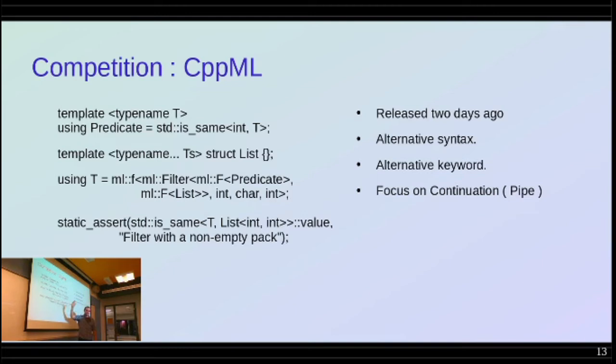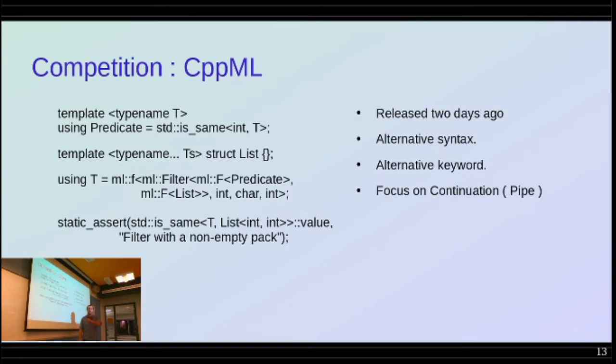This filter puts those types that correspond to the predicate into another MLF list. So with int, char, int, is it the same as int? You must return two ints because we removed the char. T is exactly the same as list of int and int. The focus is on continuation — if you were to put something else in list, you can continue to do operations on the result. This is cool because you could filter everything that is not int, add const to them, filter them for another thing, whatever — you're playing with types.